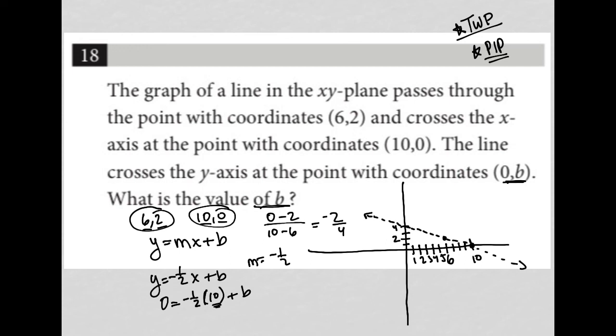So I'm replacing x with 10 from here, replacing y with 0 from there. -1/2 times 10 is -5. So this turns into 0 = -5 + b. And therefore, if I add 5 to both sides, I end up with b = 5.